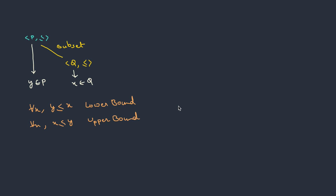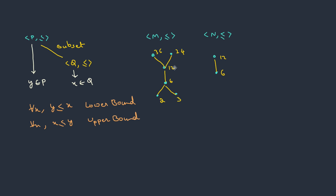Let's take an example to understand this. Here we have a partial order M which has the elements 2, 3, 6, 12, 24, and 36, and we have another partial order N which has 6 and 12. This N is a subset of M, as you can clearly see. Now for this we need to find the upper bounds and the lower bounds, so let's start with the lower bounds.